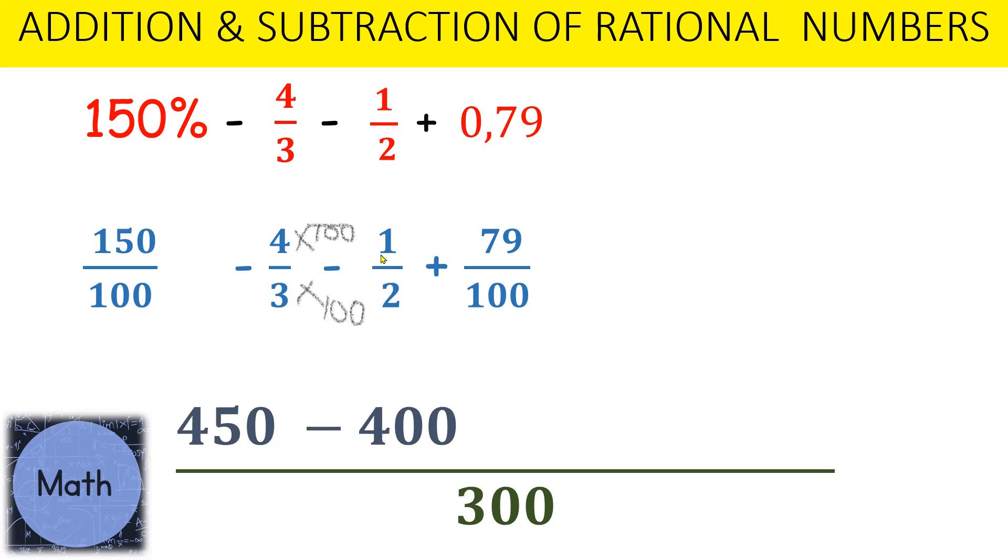Moving on to the next fraction, we have minus a half. To get a common denominator of 300, 2 times 150 will give us 300, so therefore we must multiply the numerator by 150. So we will have minus 150.